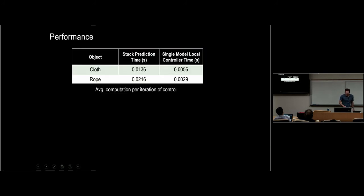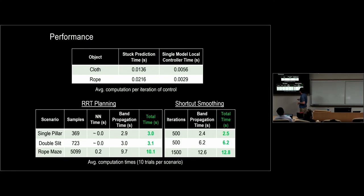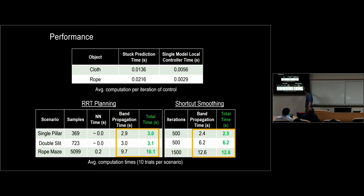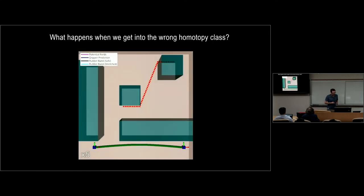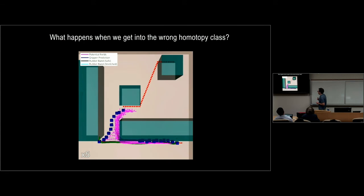In terms of computation time, control times per iteration are reasonable. Planning times are about 3 to 10 seconds depending on the environment size, and smoothing takes about 2.5 to 12 seconds. What dominates planning is the band propagation — the simulation of that elastic band. If this were a full-blown physics simulator, these numbers would be much higher.